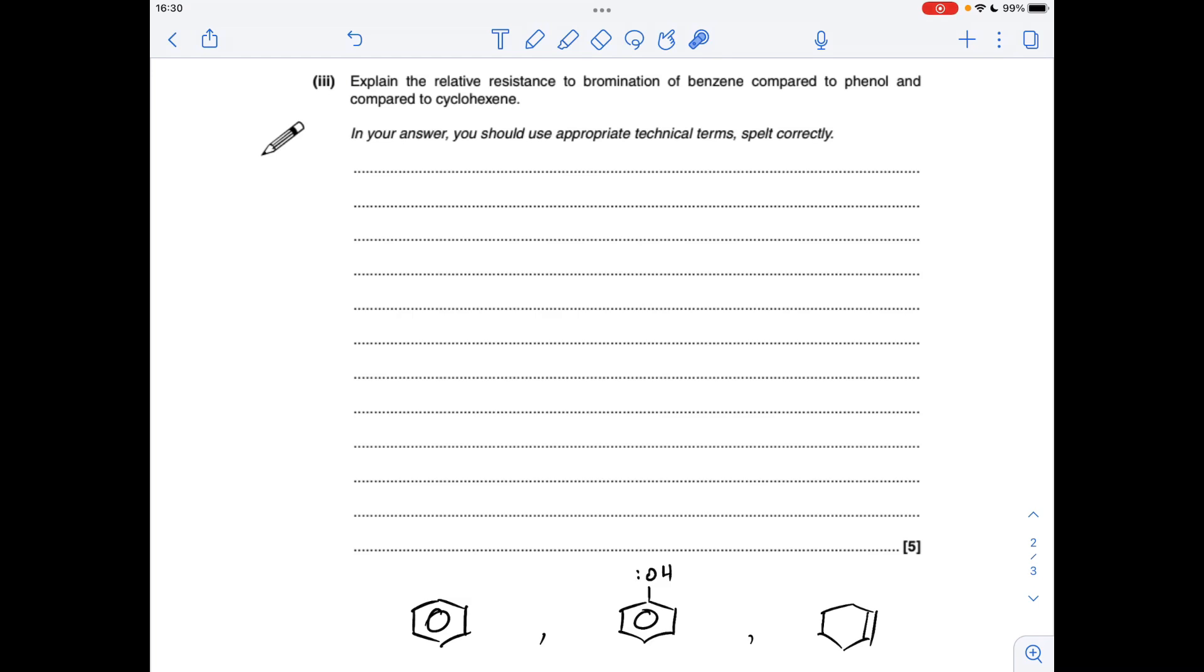And the very last part of the question is all about the relative resistance to bromination of benzene, compared to phenol, compared to cyclohexene. So it's all down to the nature of the pi-electrons in the molecule.